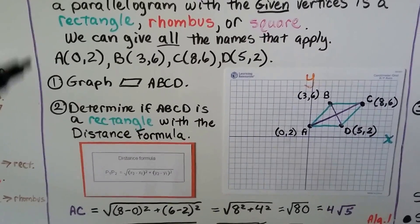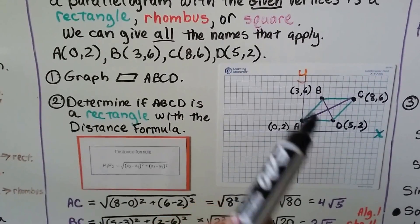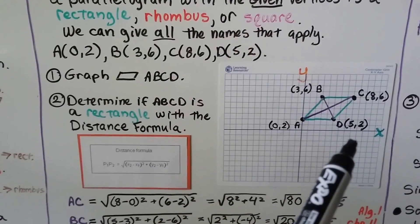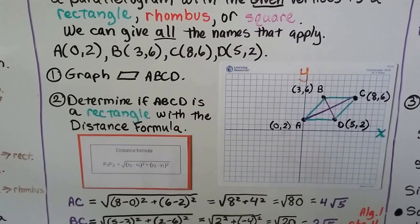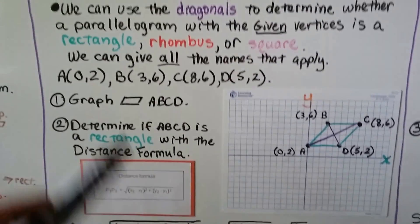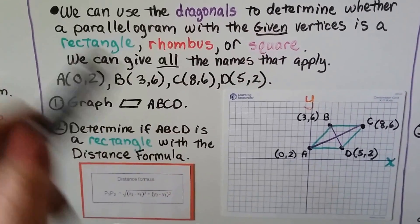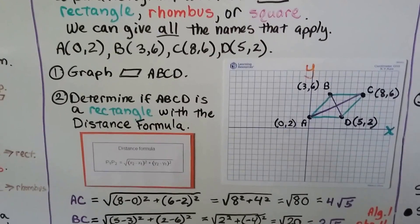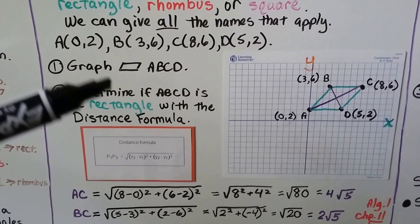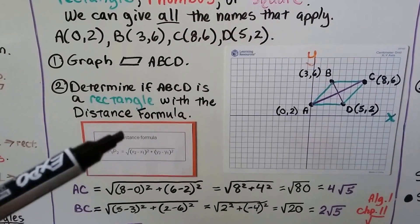So, we have our points. We've got A is at 0,2, B is at 3,6, C is at 8,6, and D is at 5,2. And we graph this parallelogram ABCD. We can put in the diagonals because we're going to use the diagonals to determine whether it's one of these. The first thing we're going to do after graphing it is determine if ABCD is a rectangle, and we're going to use the distance formula.